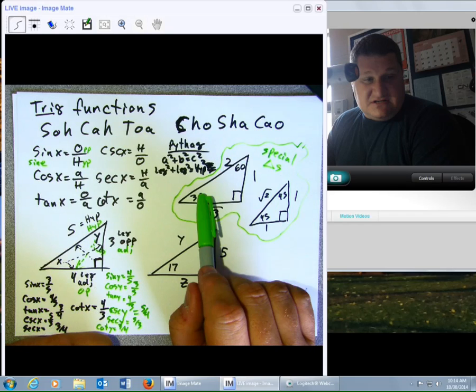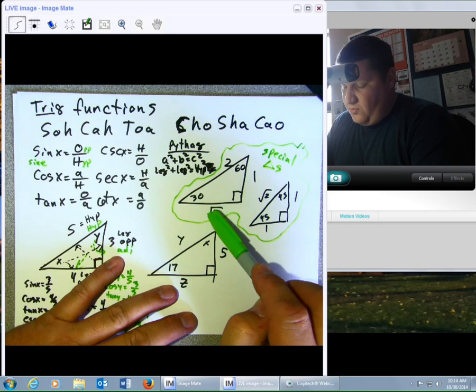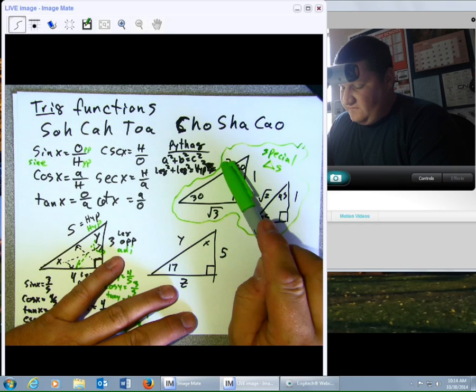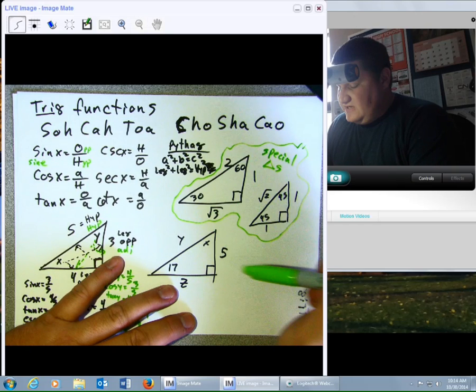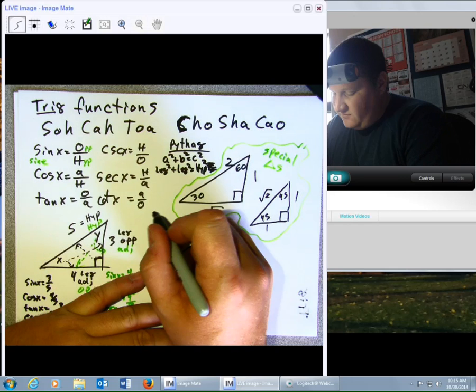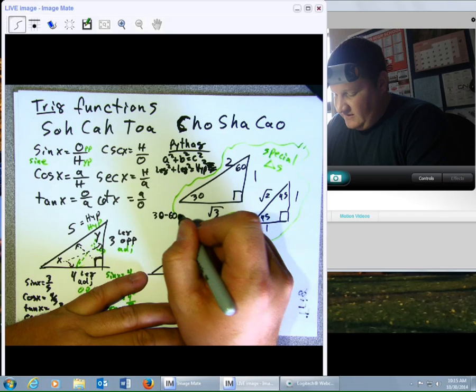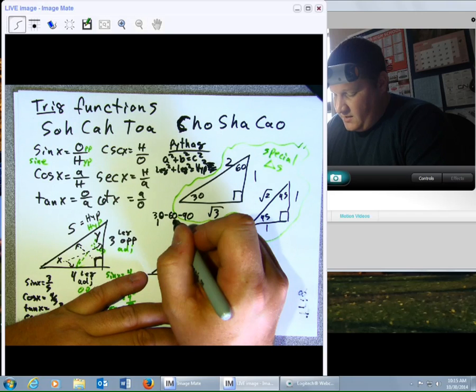Across from 30 is always 1. Across from 60 is always root 3. Across from 90 is 2. So, these relationships always go together. If you wish, you may even write them as follows. 30, 60, 90, 1, root 3, 2.